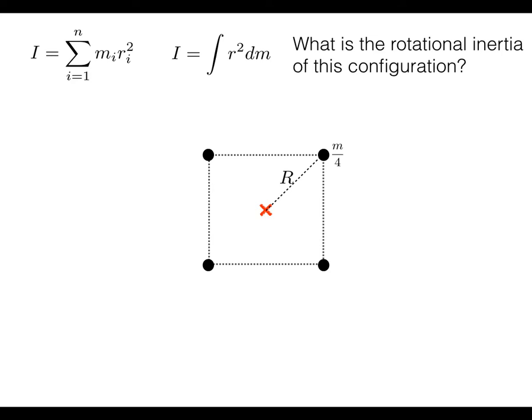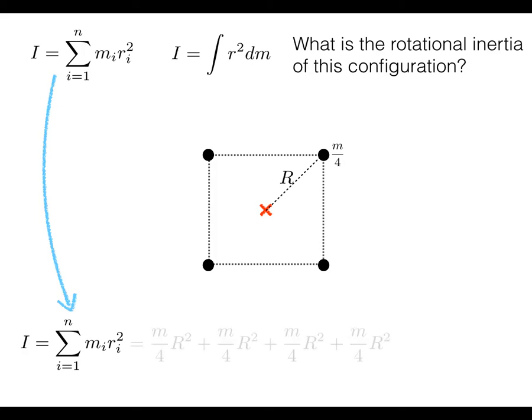Since we have four discrete masses, it's better to use the summation form of rotational inertia rather than the integral form. Each mass M_i equals M/4 and each is at distance R from the axis of rotation. So we get four identical terms of (M/4)R², and when you add them together you simply get MR².